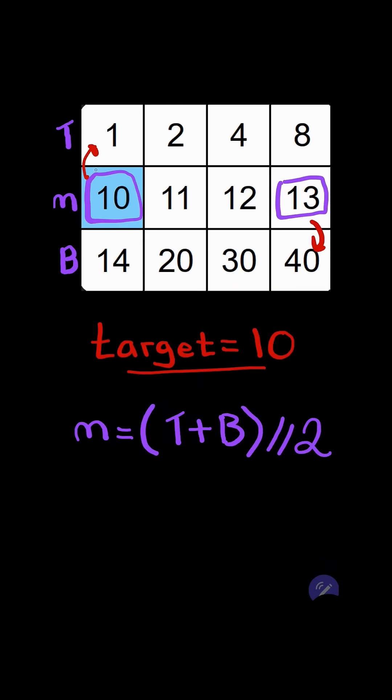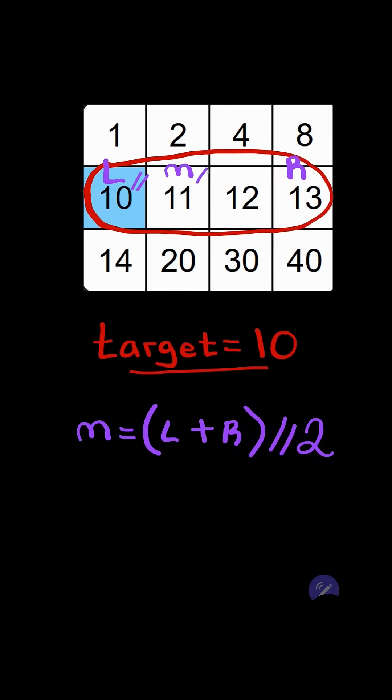In this case, the target is neither less than or greater than mid, so the target must exist in mid. And then we perform binary search again on the middle row.